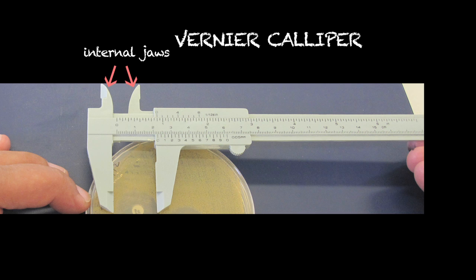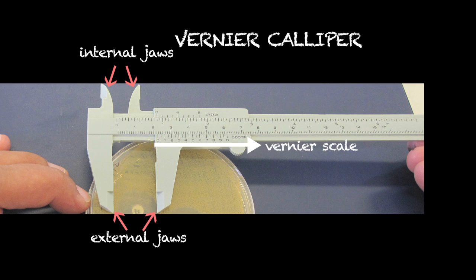It consists of the internal jaws, the external jaws, the vernier scale, and the fixed main scale.